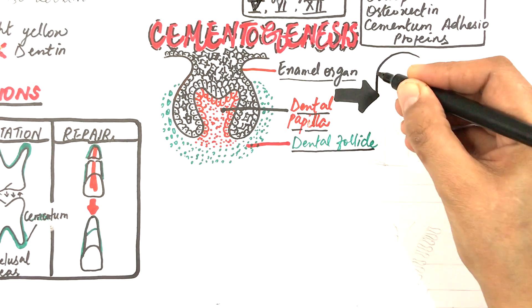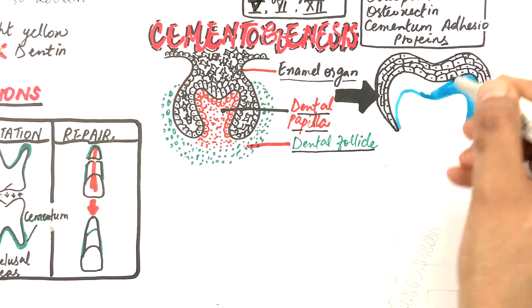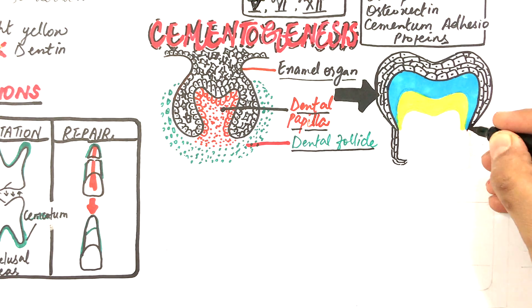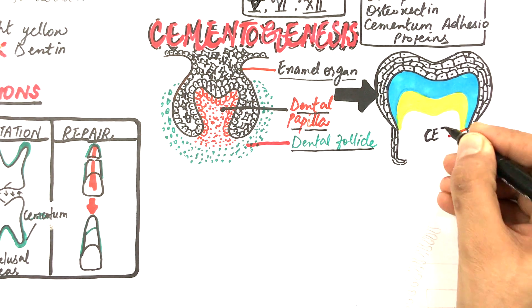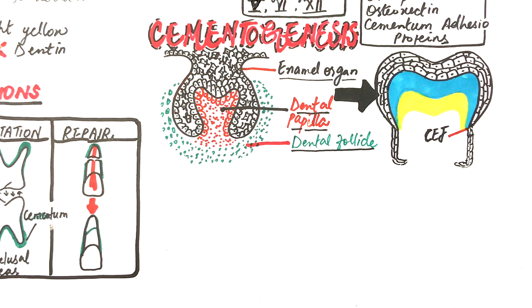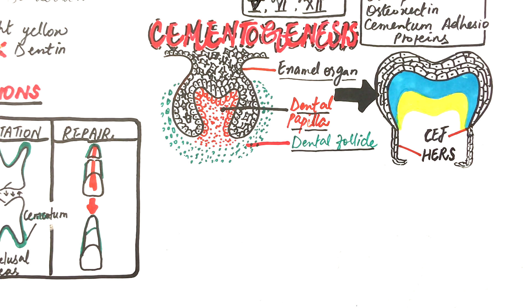After the crown of a tooth is formed up to the future cementoenamel junction or CEJ, the enamel organ regresses and turns into reduced enamel epithelium. In this diagram, the reduced enamel epithelium is shown in black, enamel in blue, and dentine in yellow. The reduced enamel epithelium is composed of cells of the inner and outer enamel epithelium, which as a unit extend downwards to form Hertwig's epithelial root sheath or HERS. This root sheath is responsible for the formation of the root of the tooth and will eventually stimulate the formation of cementum.